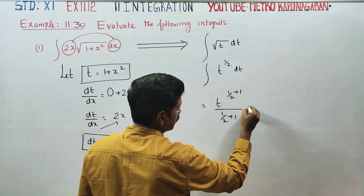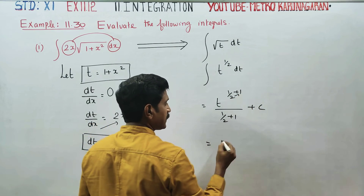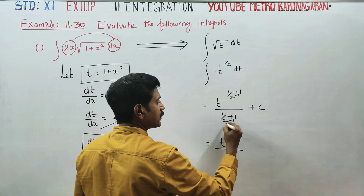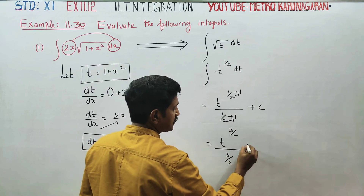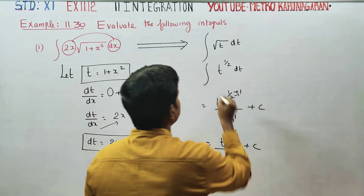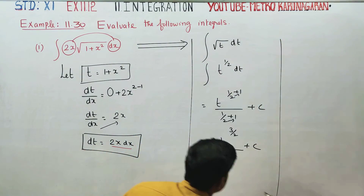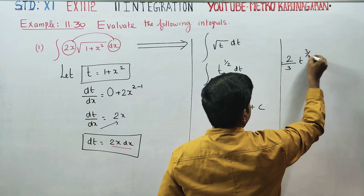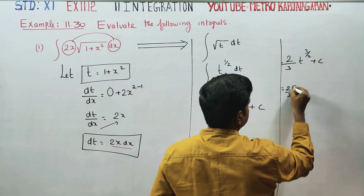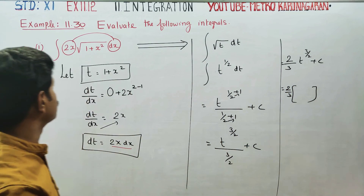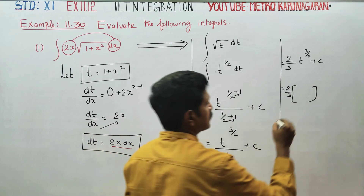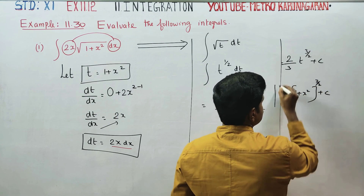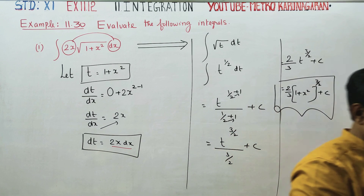Integrating t to the power 1/2, we get t to the power 3/2 plus c. Cross multiplying: 2 times 1 is 2, plus 1 is 3 by 2. Reciprocal of 3/2 is 2/3. So the result is 2/3 times t to the power 3/2. Substituting back the original: 2/3 times (1 plus x square) to the power 3/2 plus c. This is your final answer. Thank you.